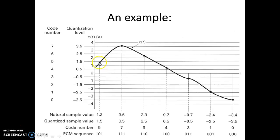And all the values x of t takes that lies between 1 and 2, it will be quantized to a particular value 1.5. It is called a quantization level. So here you can see different quantization levels which are marked.